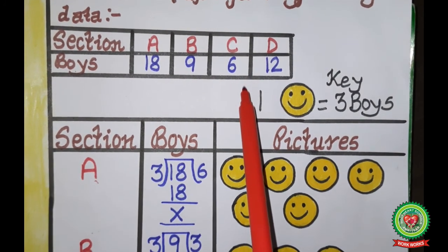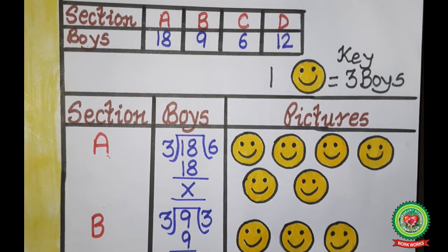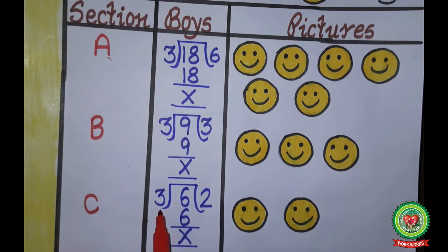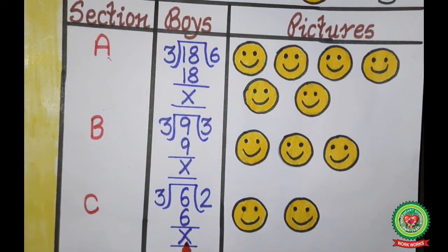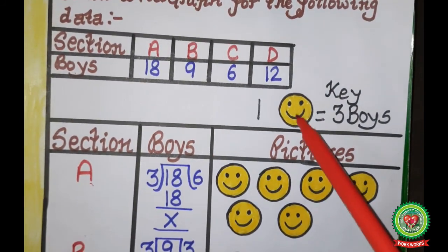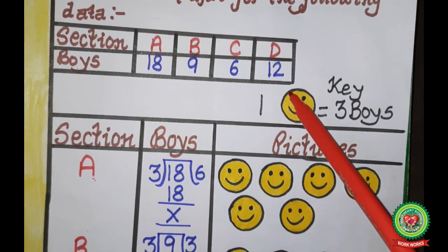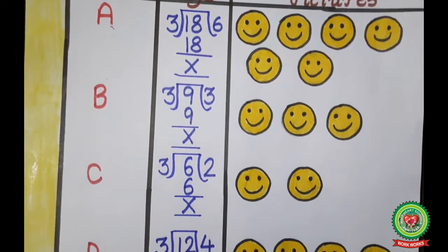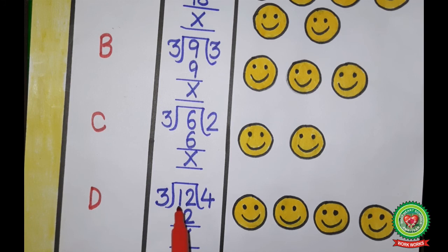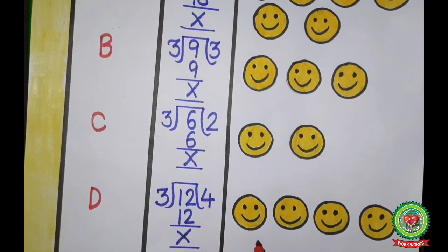In section C, there are 6 boys. Divide 6 by 3 — the quotient is 2, because 3 twos are 6. So we draw 2 smiley faces. In section D, there are 12 boys. Divide 12 by 3 — the quotient is 4, because 3 fours are 12. So we draw 4 smiley faces.